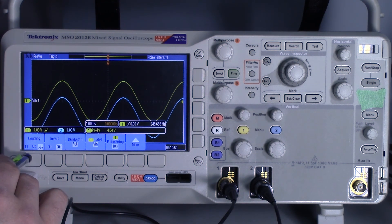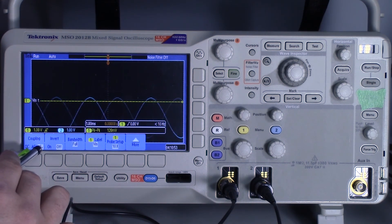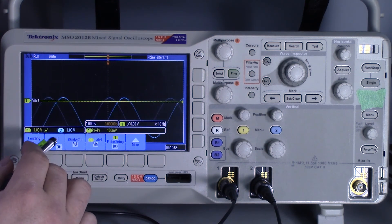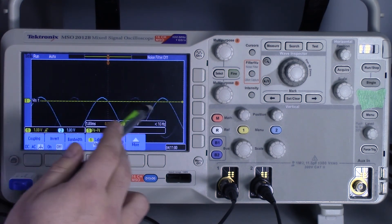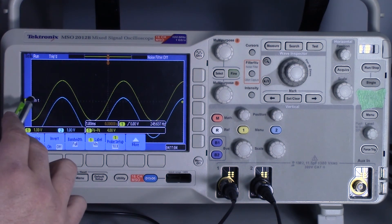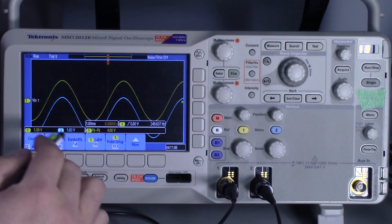And if I press the ground, then it just goes to flat. So the reason you would use this ground is because you want to know where on your screen your ground reference or your zero voltage reference is, and then once you turn it back on, you can know that this is actually zero volts, this is your positive voltage, and this is your negative voltage.